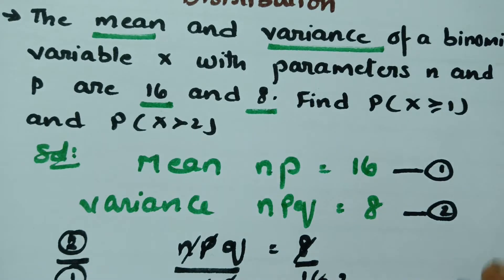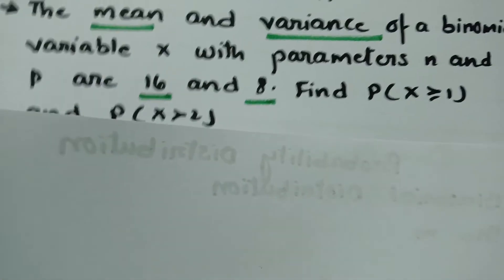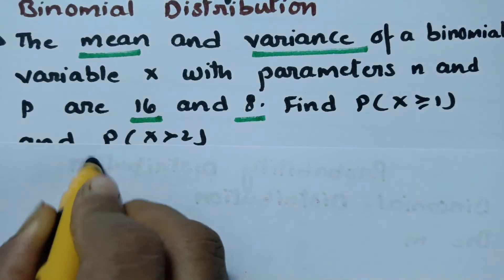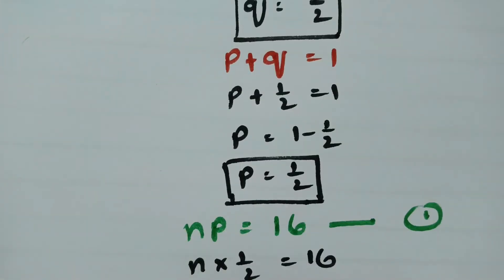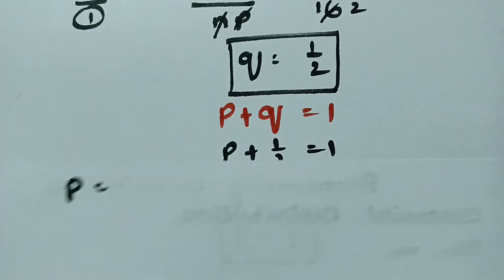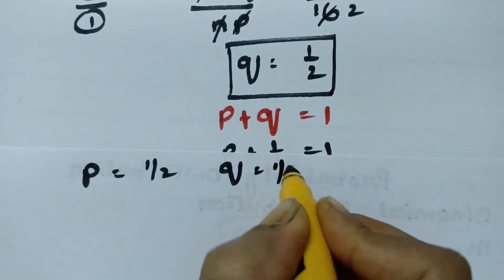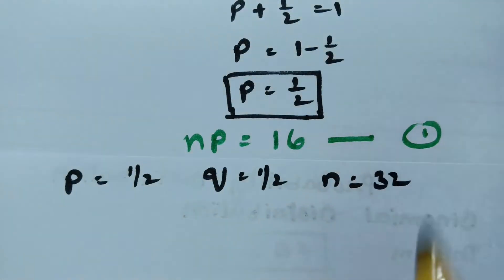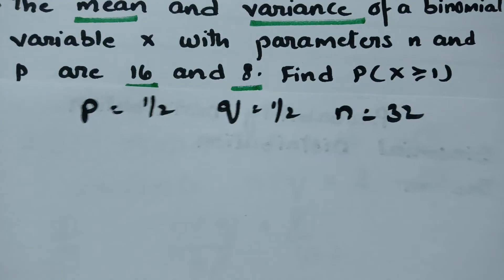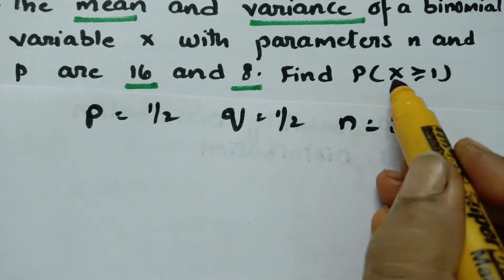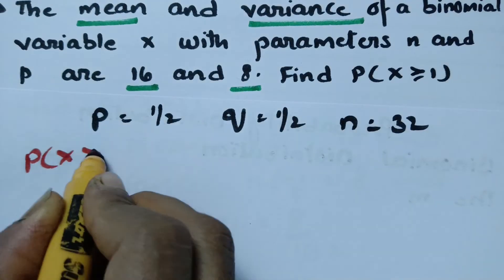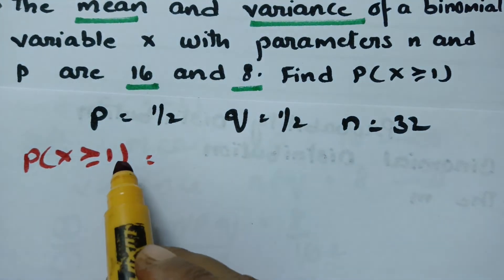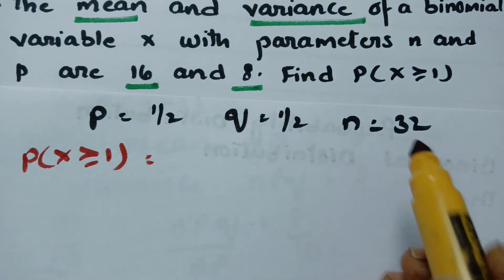Now we have to find the probability of x greater than or equal to 1. Our values are p equals one-half, q equals one-half, and n equals 32. Probability of x greater than or equal to 1 means probability of x equals 1, plus 2, plus 3, plus 4, and so on up to 32.